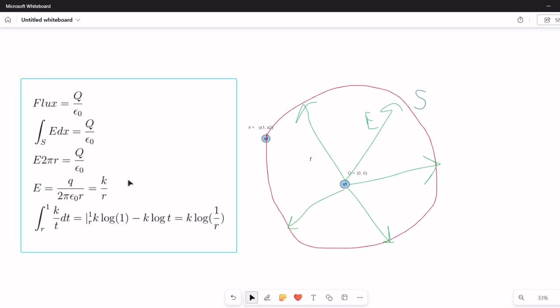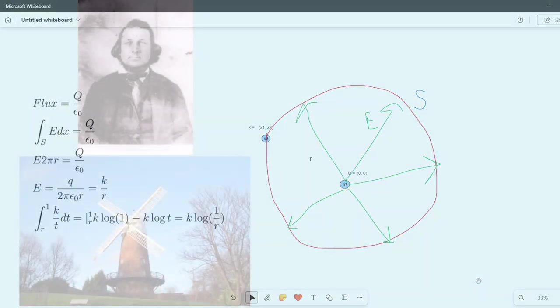This is the two-dimensional version of Coulomb's law. In three dimensions, the force would be K over R squared, and the rest of this presentation would follow with a few changes.